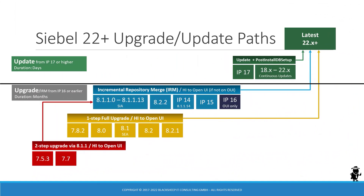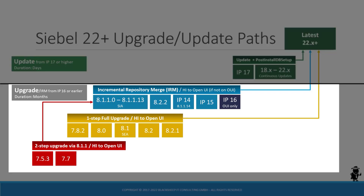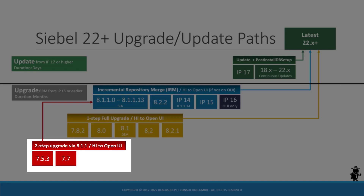Let's take a look at the path for an upgrade from a version prior to Innovation Pack 17 to the latest and greatest release. If your current Siebel CRM version is below IP17, you find yourself in the lower portion of the diagram. You have to conduct an upgrade project to get to Siebel 22.1 or higher. The duration of a Siebel CRM upgrade project is measured in person months, sometimes person years. The project complexity and duration are tightly coupled to the number of customizations applied over the years and also to the age of your Siebel application. In a nutshell, the more time and money was spent on customizing Siebel, the more time and money will have to be spent on the upgrade. If you come from a very old Siebel release, such as Siebel 7.5, you have to execute a two-step upgrade.